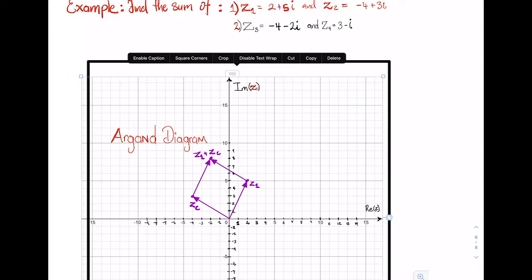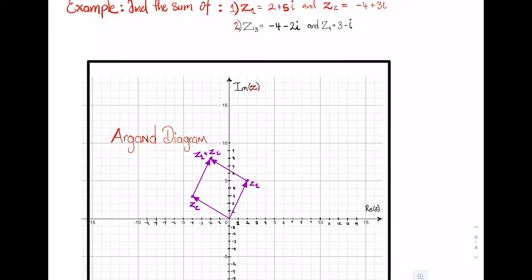If we copied Z2 and pasted it onto Z1, we recognize that we also end up at the same point. So therefore, from this diagram, we can see that Z1 plus Z2 is equal to negative 2 plus 8i.